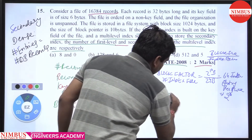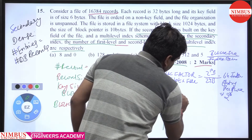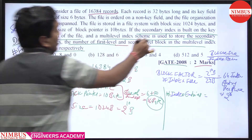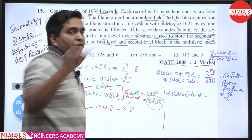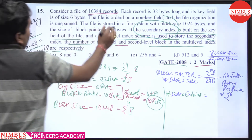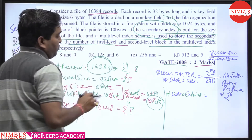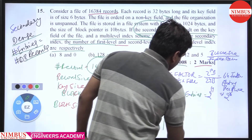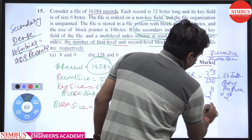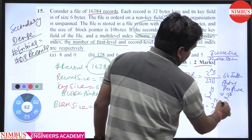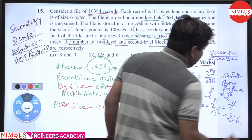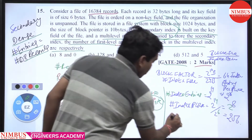Since it is a dense index, number of index entries equals number of DB records, that is 16,384 or 2 raise to power 14. So the number of index blocks in the first level is 2 raise to power 14 divided by 2 raise to power 6, giving 2 raise to power 8, that is 256 index blocks in the first level.